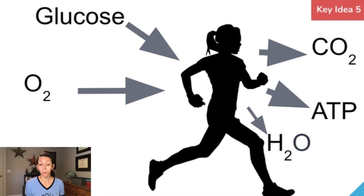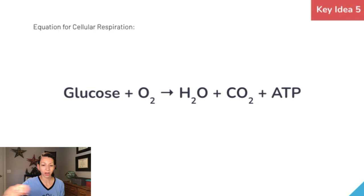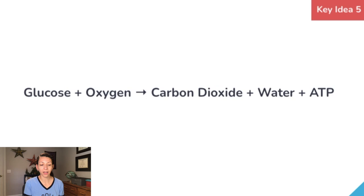If we were to look at the chemical equation and write it all the way out, this is what it would look like. Here is the same equation written in words: glucose and oxygen yield carbon dioxide, water, and ATP. This is just a summary equation because there are lots of different little steps during the entire process of cellular respiration to get us to these end products.